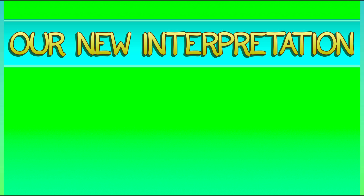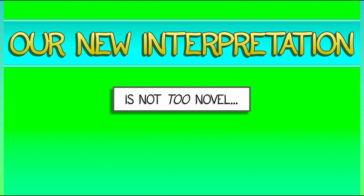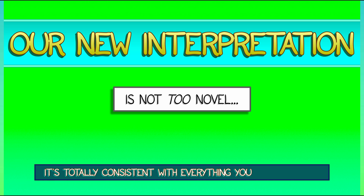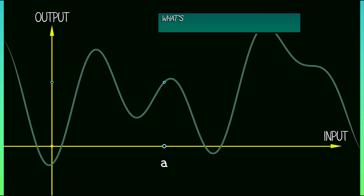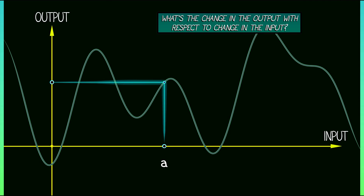This new interpretation for the derivative in terms of first-order variation is not too weird. It is, in fact, totally consistent with everything that you knew about the derivative before. Consider, for example, our interpretation of the derivative as the slope of the tangent line of a graph. Draw the graph of a function, pick some input — you want to know how the output changes when you change the input. Well, to first order, that coefficient is the derivative.